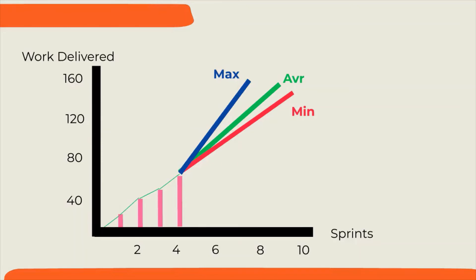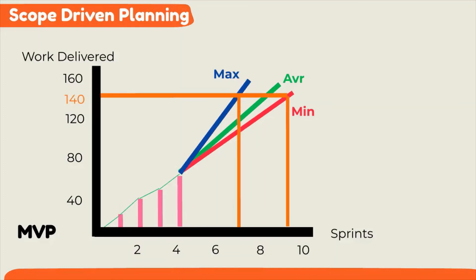Another way to use sprint burn-up charts is with scope-driven planning. If a stakeholder asks the product owner by when the team can deliver minimum viable product, product owner can look at user stories that fit in the MVP and see how many story points. Assuming it is 140, we draw the lines to the intersection of delivery lines. Product owner can tell the stakeholder MVP will be delivered between sprint 7 and 9.